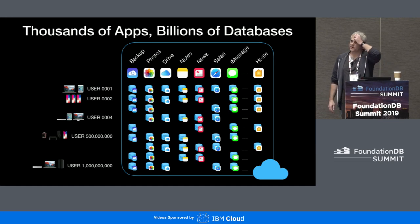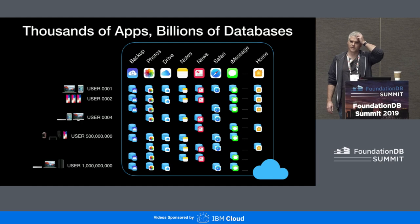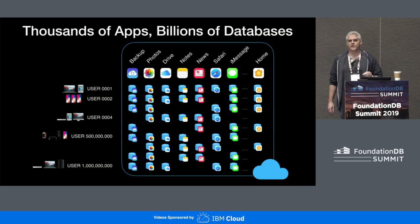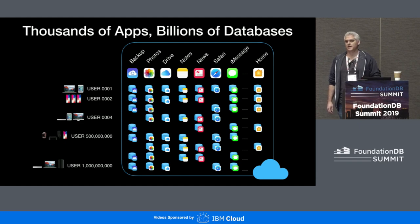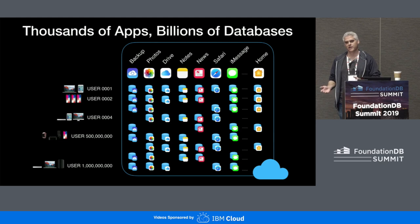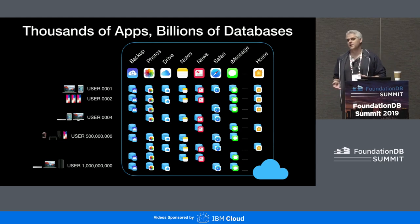From a tenancy model, CloudKit takes an inverted view of tenancy from what a lot of other database systems do. For every application running on your device, whether it be your phone or on macOS, every application that uses the cloud is allocated a distinct logical database. So across thousands of applications, each instance of an application you're running is allocated its own database.